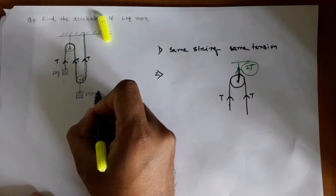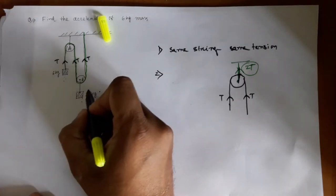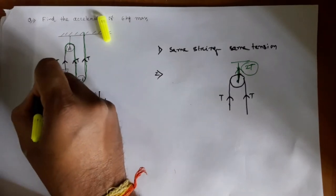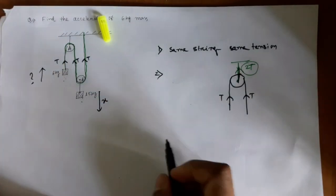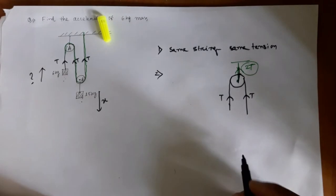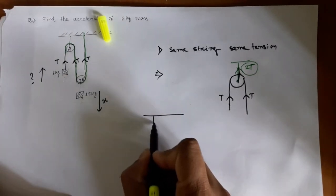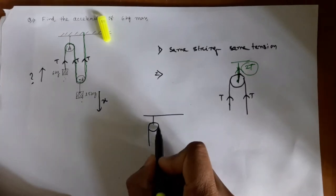Now, coming to the problem, I am going to redraw. Keep that in mind: if the 15 kg mass goes down by x distance, how much distance will it cover upward? And I am going to redraw this.